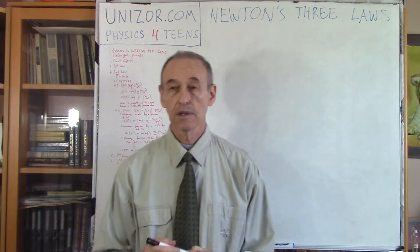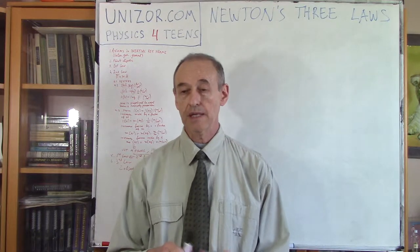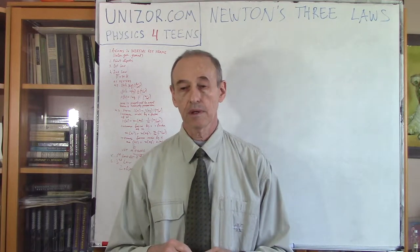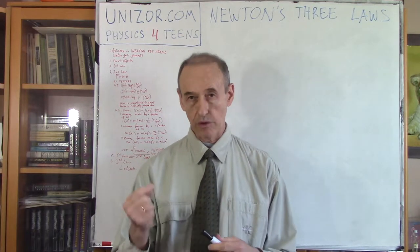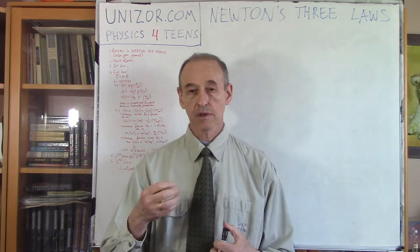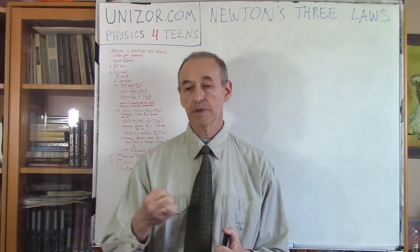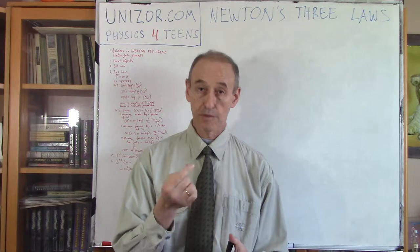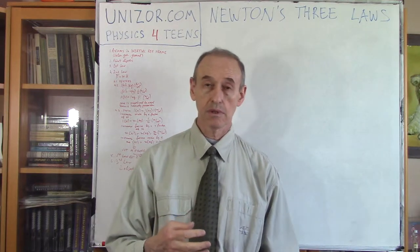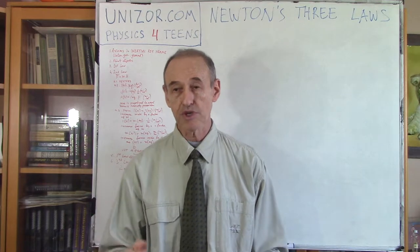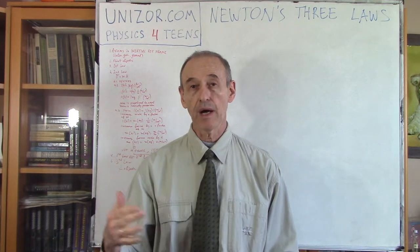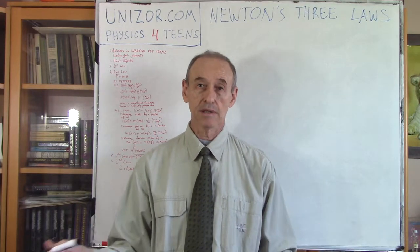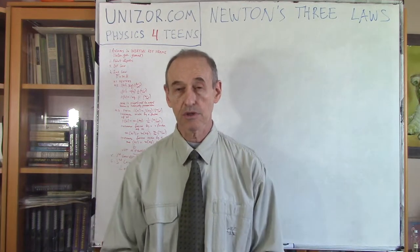Another very important aspect: in most cases when we are talking about objects, we are talking about point objects, which means the object is infinitely small. Whenever we talk about trajectory, we are talking about the trajectory of the point object. Sometimes we will omit the word 'point' and just talk about objects, but we really have in mind that the object is infinitely small — its coordinates are basically a coordinate of a point in three-dimensional space.